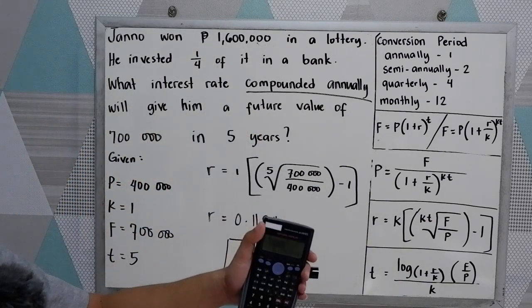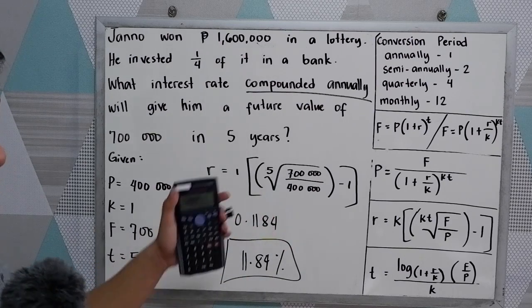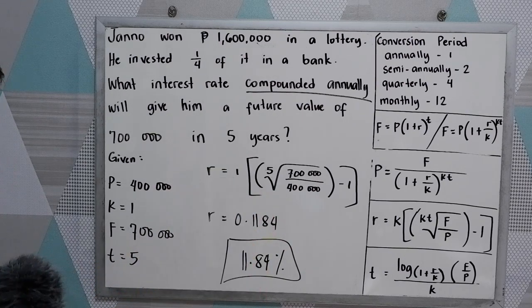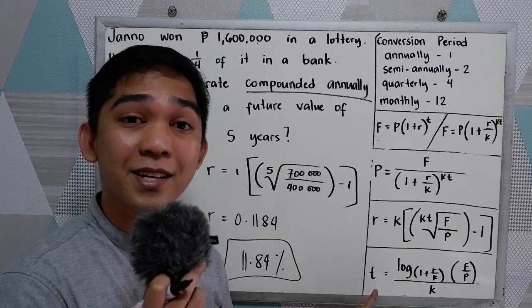And since we have a calculator, it's easy for you. Just insert all the given in your calculator. So that is 11.84%. In our next problem, what if the time is missing? Stay tuned.